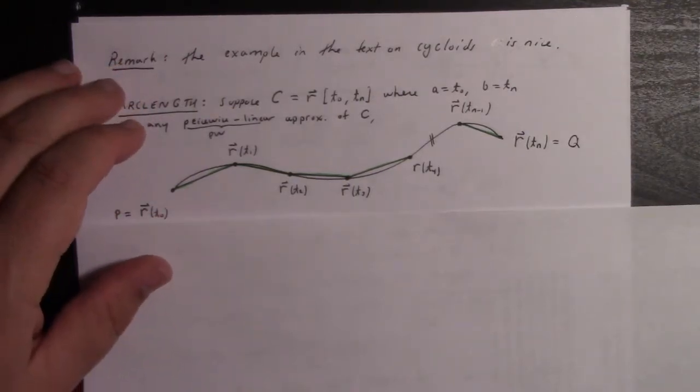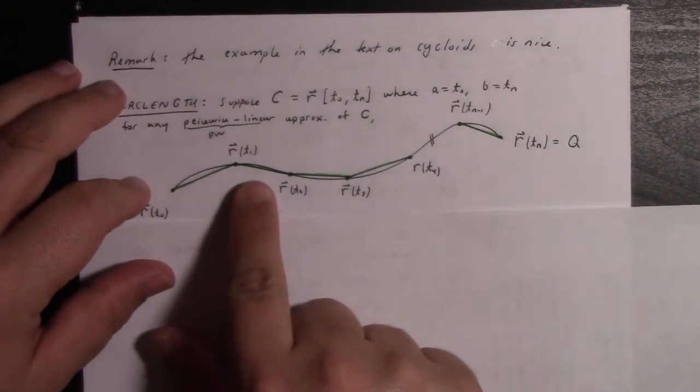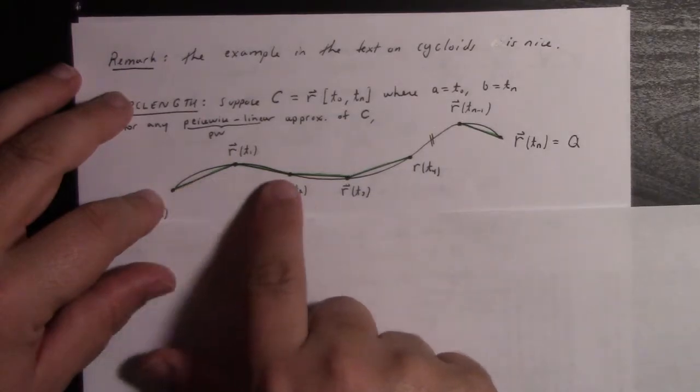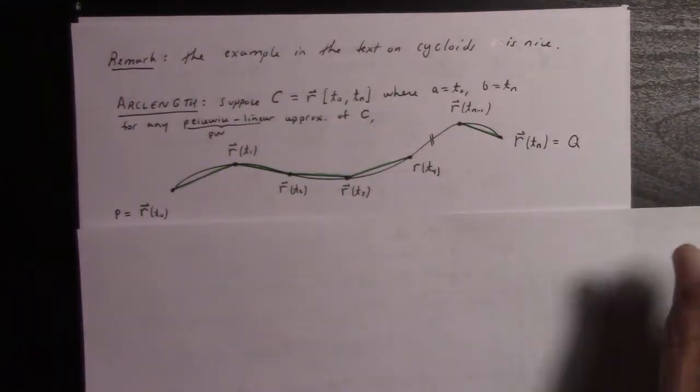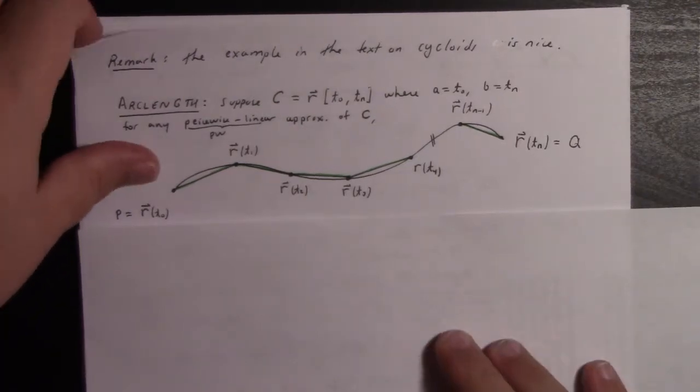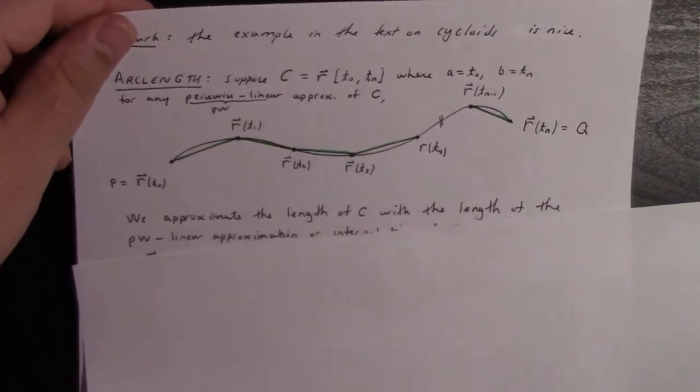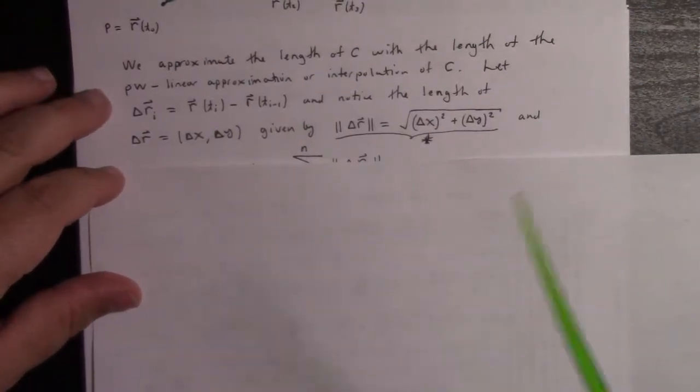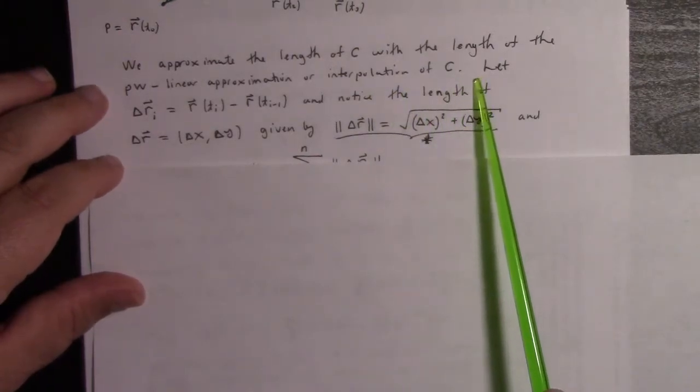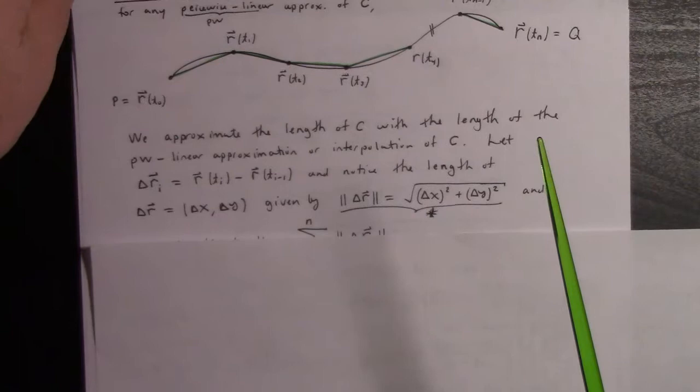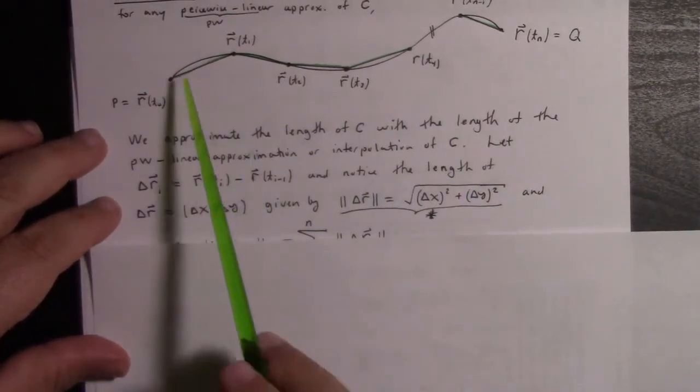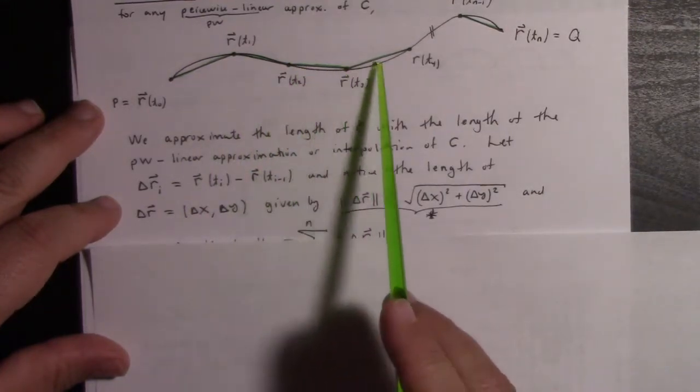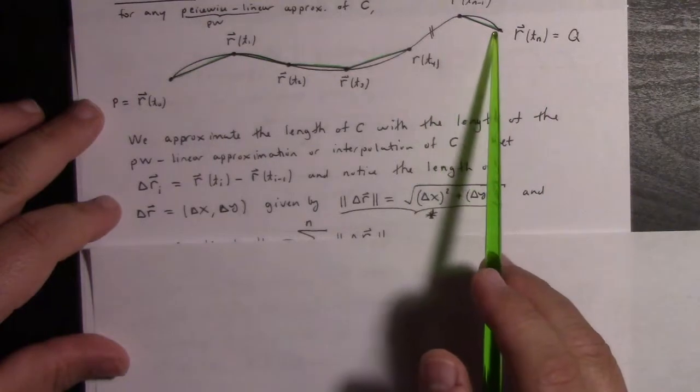Some people call this a broken line segment. This piecewise linear path is close to the curve, but different than the curve. But certainly if you calculate the length of these little line segments, it should get close to the length the string would take if you were to lie it along the curve and then stretch it out straight.